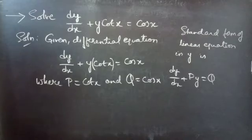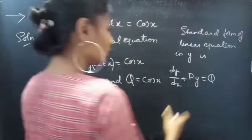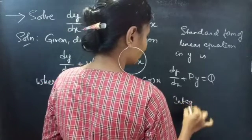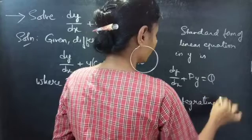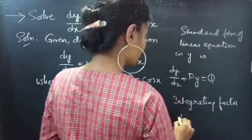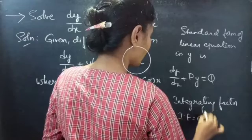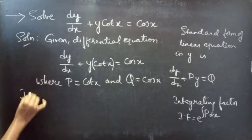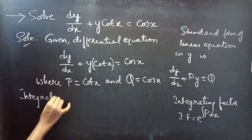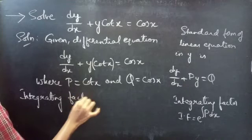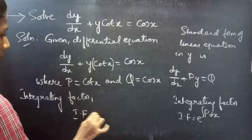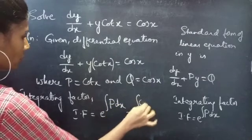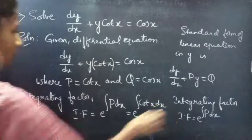Now we will find the integrating factor. We know that the integrating factor of the linear equation is given by e to the power of the integral of p dx. So the integrating factor IF equals to e to the power of the integral of cot x dx.